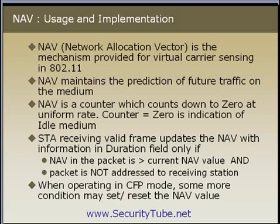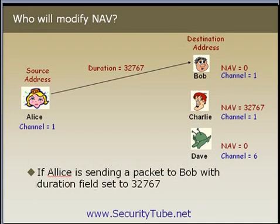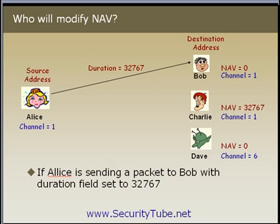Let's see one example of the NAV value. In this example, Alice is transmitting a packet on channel 1 to Bob. The source address will be Alice's machine address and the destination address will be Bob's machine address. In this packet, the duration value is set to 32767. On the same channel, Charlie is also present, and there is one more station, Dave, who is present on a different channel — not the same as Alice and Bob's channel.